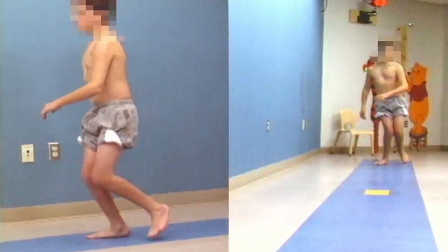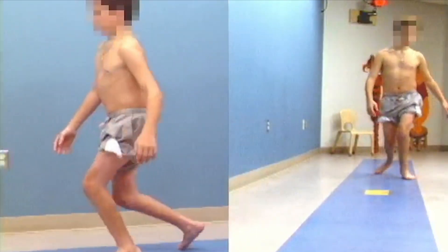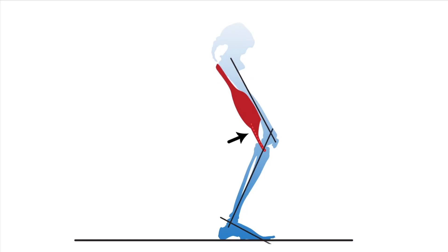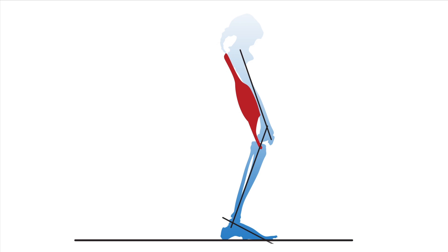In children with cerebral palsy, they often become contracted or too tight. One common treatment is a surgery to lengthen the hamstrings.